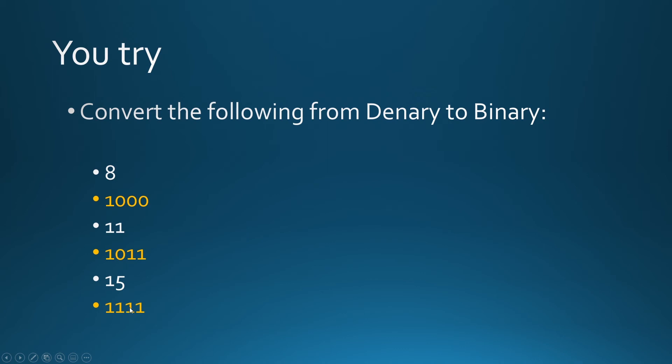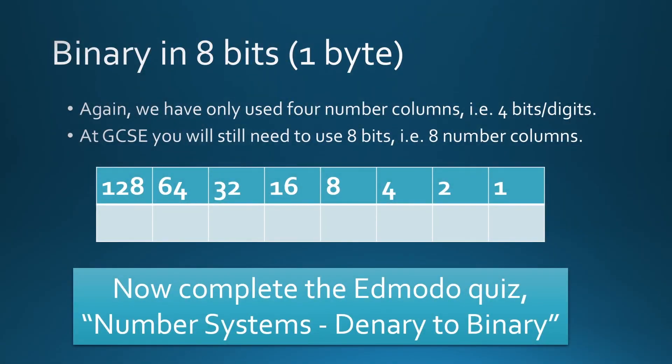The next column is the 2s. Yep, a 2 will fit into a 3, so take that away. That's going to leave you a 1. So 15 is 1 1 1 1. Reminder, GCSE, you'll be using a byte, 8 columns.